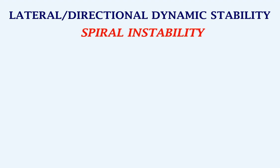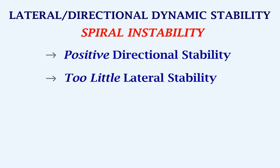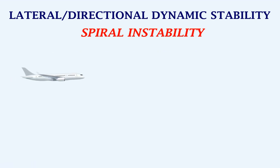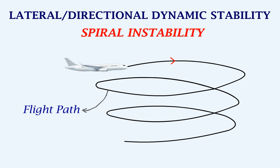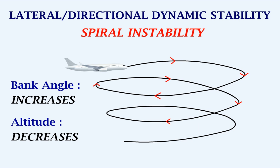One of the cases related to lateral and directional dynamic stability is spiral instability. This occurs if the aircraft has positive directional stability but not enough lateral stability. The flight path after a lateral disturbance will look like this. In this instability, the bank angle increases, the altitude decreases, and the turn becomes tighter.